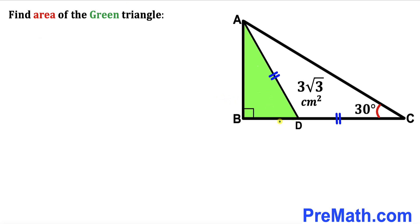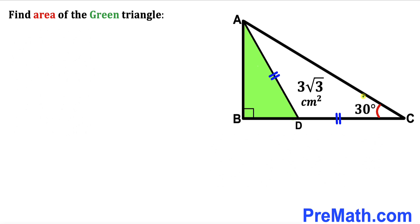Welcome to pre-math. In this video we have a right triangle ABC along with angle bisector AD. Segment AD is equal to segment CD, angle DCA is 30 degrees, and the area of the white triangle ADC has been given as 3 times square root of 3 centimeters square. Our task is to calculate the area of the green shaded right triangle ABD.